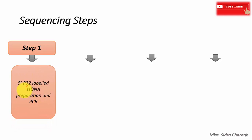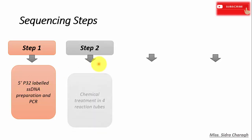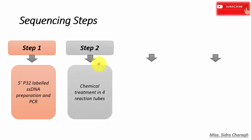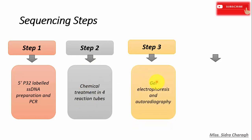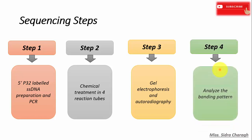We will discuss the sequencing steps one by one. The first step involves labeling the five prime end of the single-stranded DNA or double-stranded DNA by P32, which is radioactive. The second step involves chemical treatment in four different reaction tubes. The third step is gel electrophoresis and then autoradiography, and the fourth step involves analyzing the banding pattern.